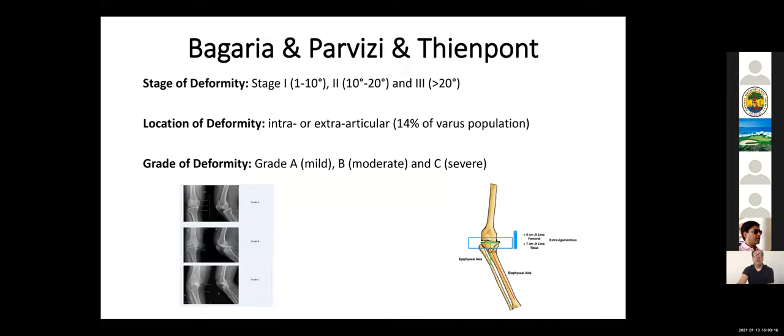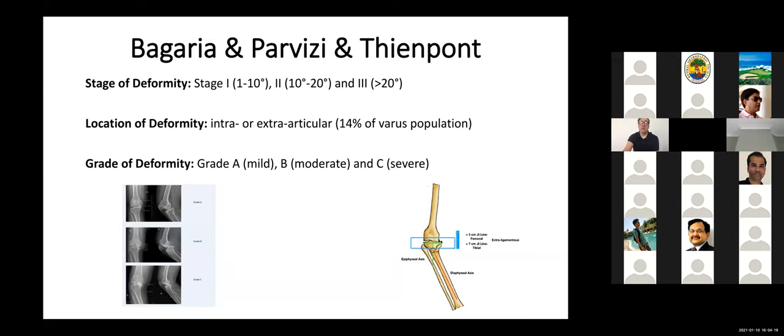And finally, this is the last work we are doing together with Dr. Bajaria and Dr. Parvizi. And this is sent to American JBJS. And on the review, you can see that we looked at varus deformity as a tumor and disease. And so this would be that you need some staging and some grading. And for the staging, we use more or less the same as what we published previously. You can see stage one, 1 to 10, stage two, 10 to 20, and stage three, more than 20. And then location, which is important, intra or extra-articular. And we found that about 14% of the varus population has some type of extra-articular deformity, what we often call constitutional varus. So you can see that on the right-hand figure, if you determine where the core is, the center of your apex, then you can know if the deformity is extra-articular or intra-articular.